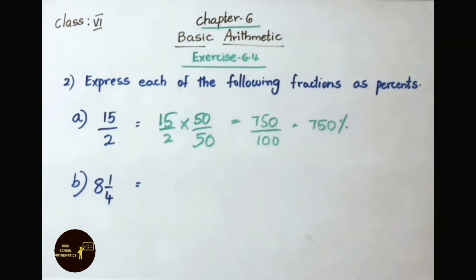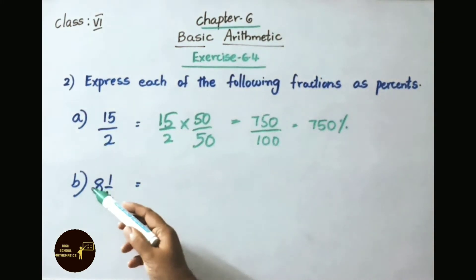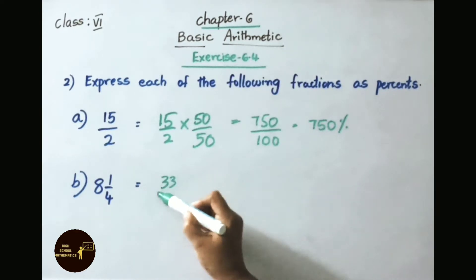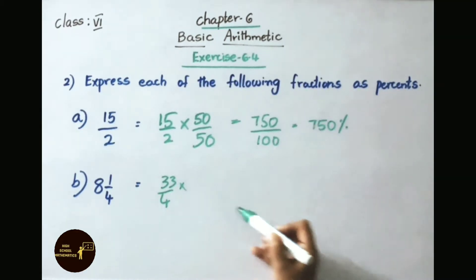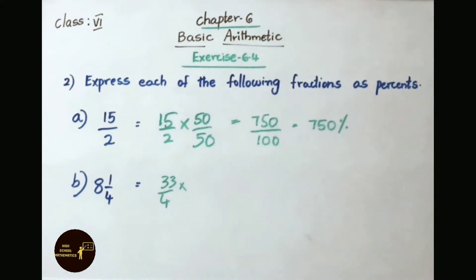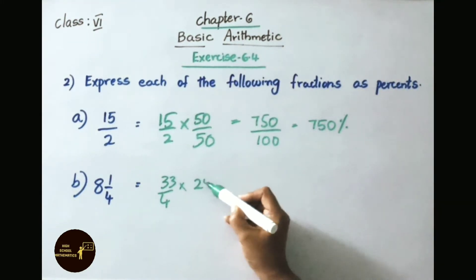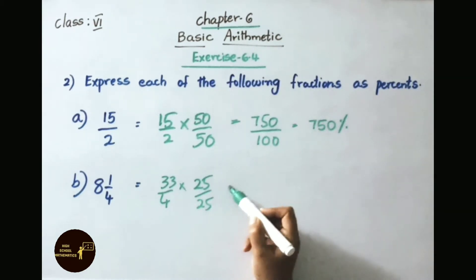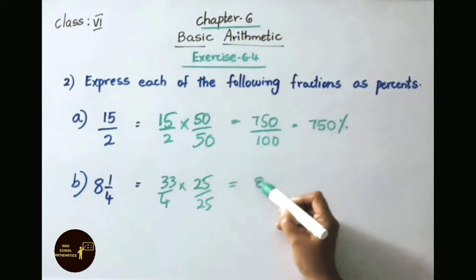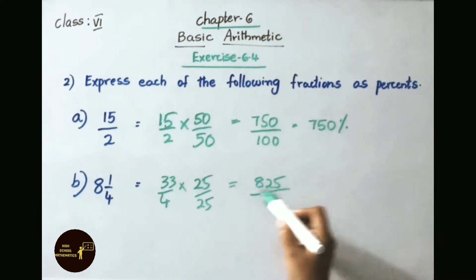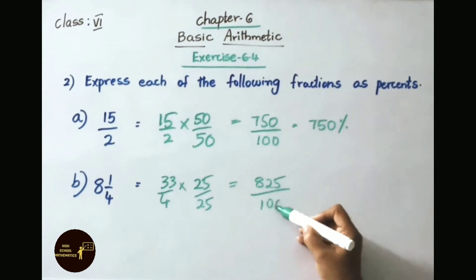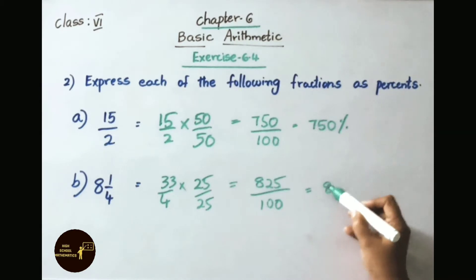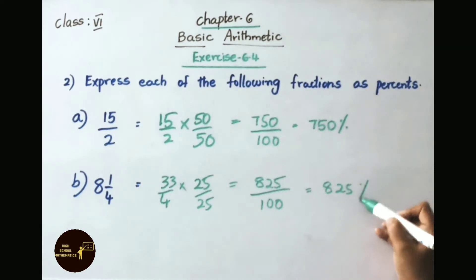Question B: 8 and 1 by 4. Convert the mixed fraction to an improper fraction: 4 eights are 32 plus 1 equals 33 by 4. To get the denominator as 100, multiply numerator and denominator by 25. 33 into 25 is 825, and 4 into 25 is 100. So 825 by 100 can be written as 825 percent.